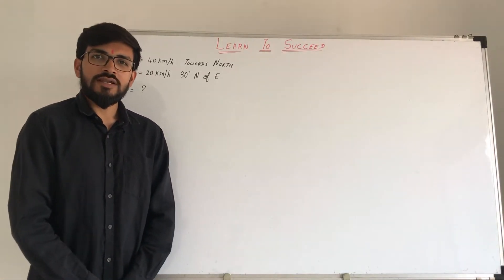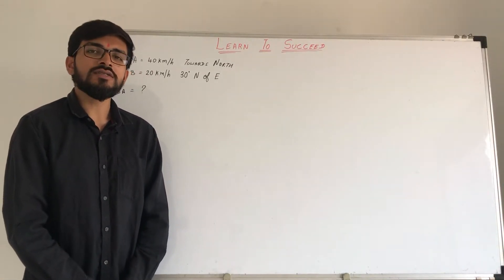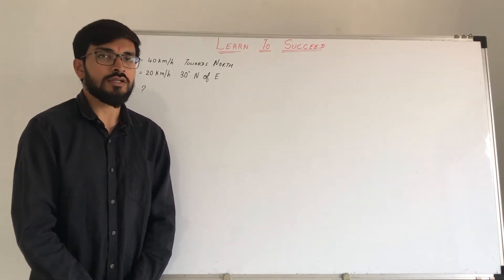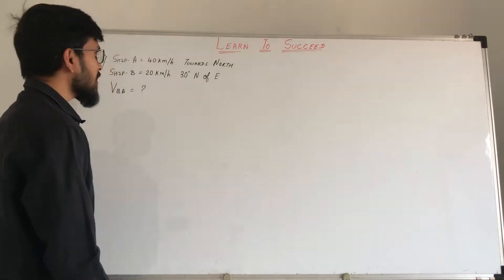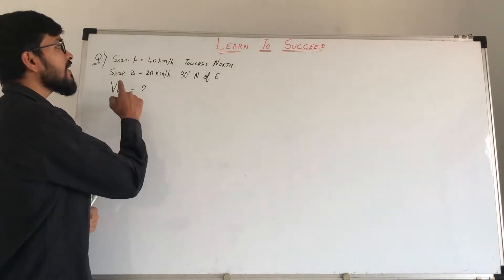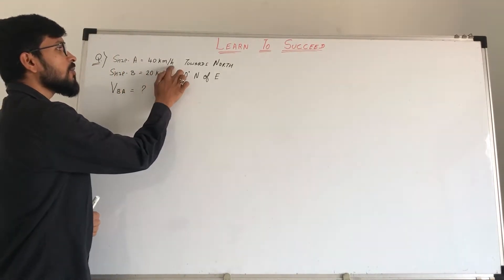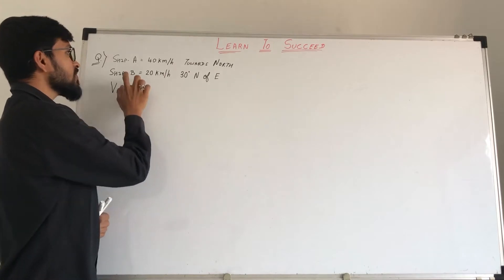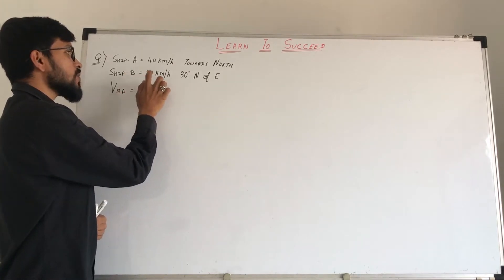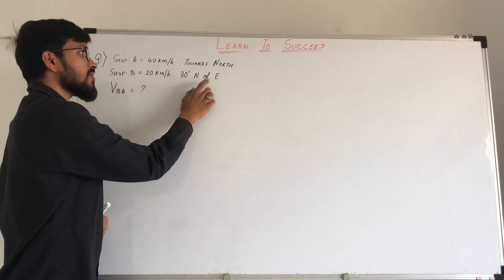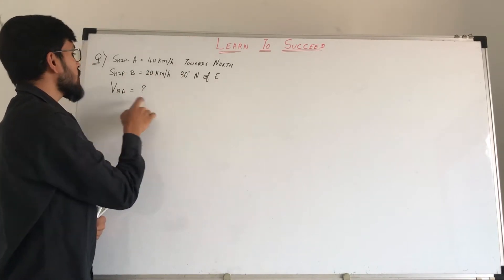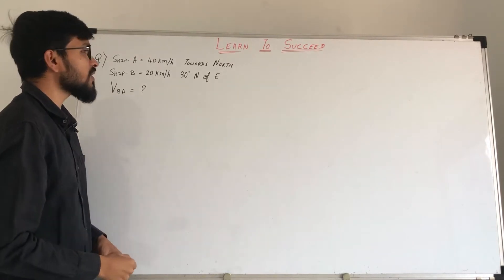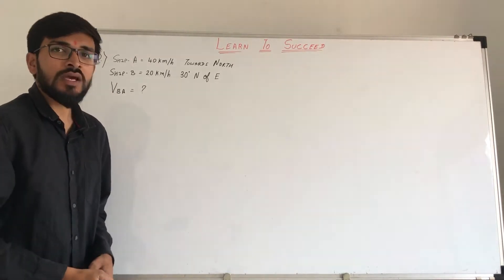Hello and welcome friends to my channel, Learn to Succeed. Today we will learn how to solve a relative velocity question. My question is: ship A's velocity is 40 km per hour towards north, and ship B's velocity is 20 km per hour 30 degrees north of east. We are going to find the velocity of B with respect to A.